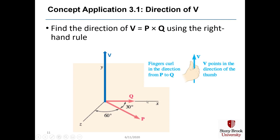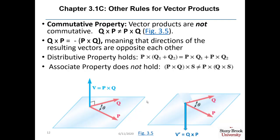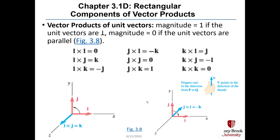Vector products are not commutative: Q cross P equals the negative of P cross Q, meaning the resulting vectors point in opposite directions—which you can verify with the right-hand rule. The distributive property does hold: P cross (Q1 + Q2) = P cross Q1 + P cross Q2. However, the associative property does not hold: (P cross Q) cross S does not equal P cross (Q cross S).